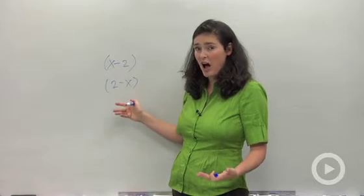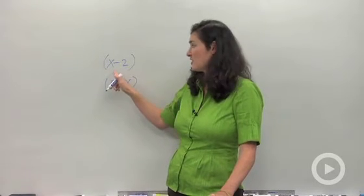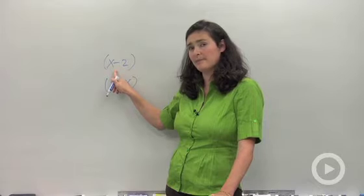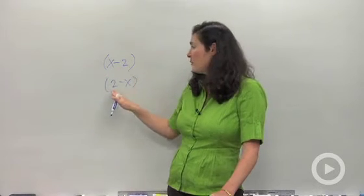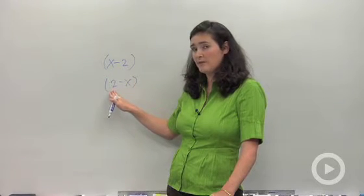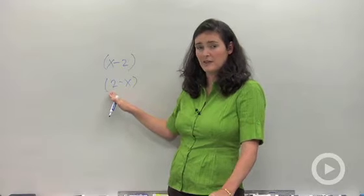They're what we call opposite factors because this guy is actually that guy multiplied by negative 1. Let me prove it to you. If I were to factor out a negative 1 from this second factor parentheses grouping...